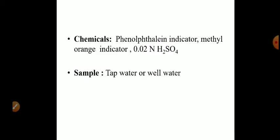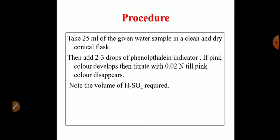The chemicals required are: phenolphthalein indicator, methyl orange indicator, 0.02 normal sulfuric acid, and of course the water sample whose alkalinity is to be determined.